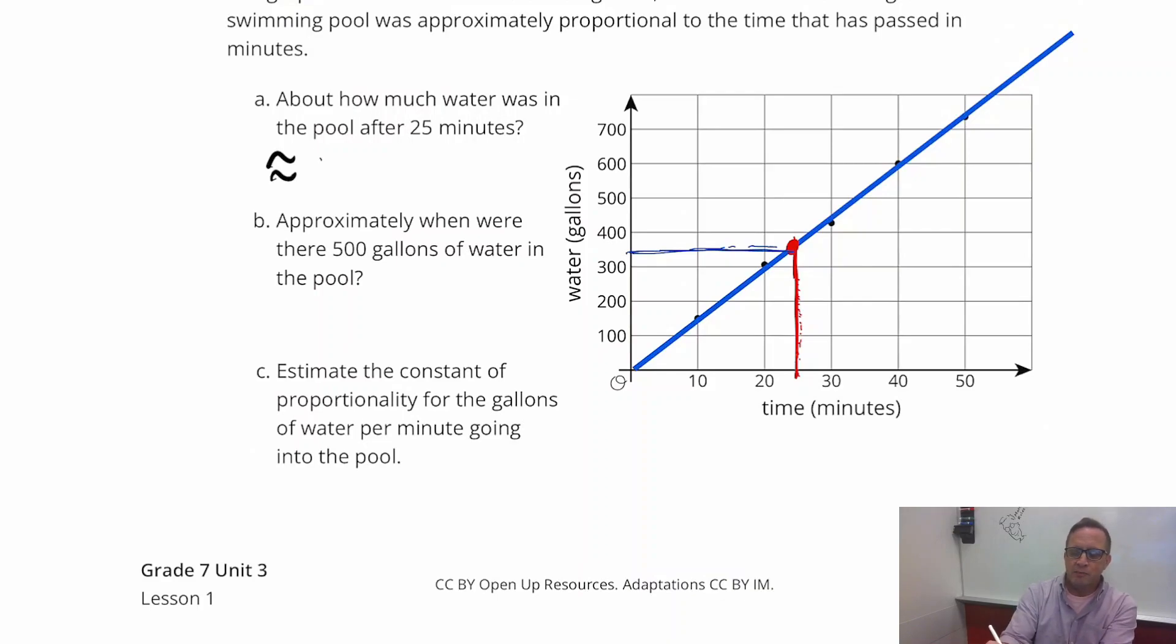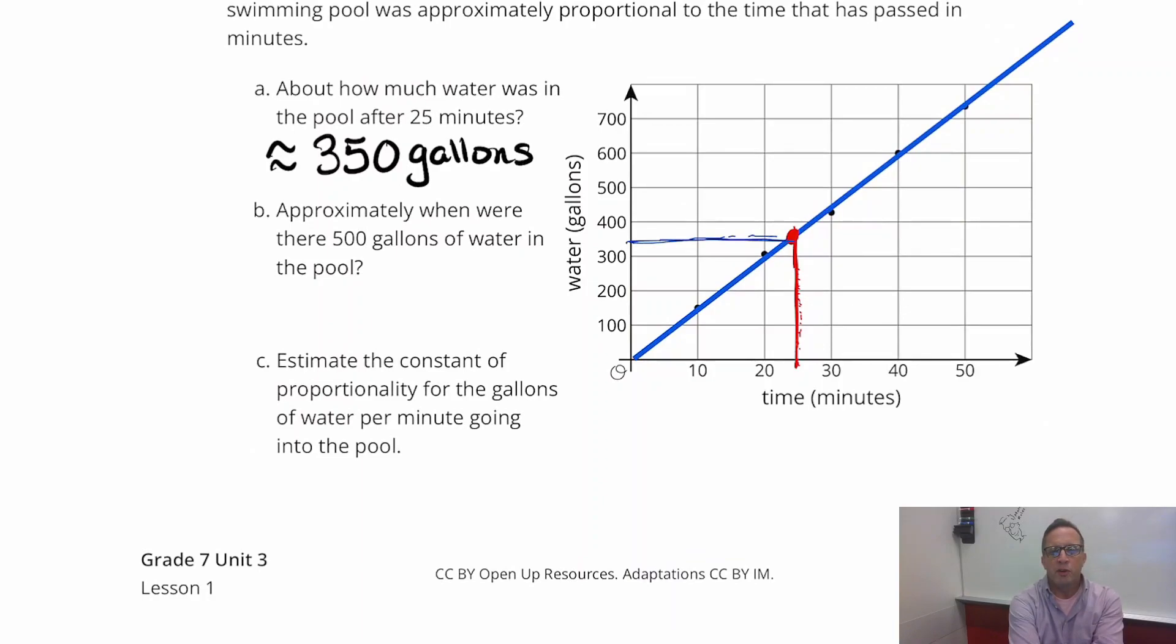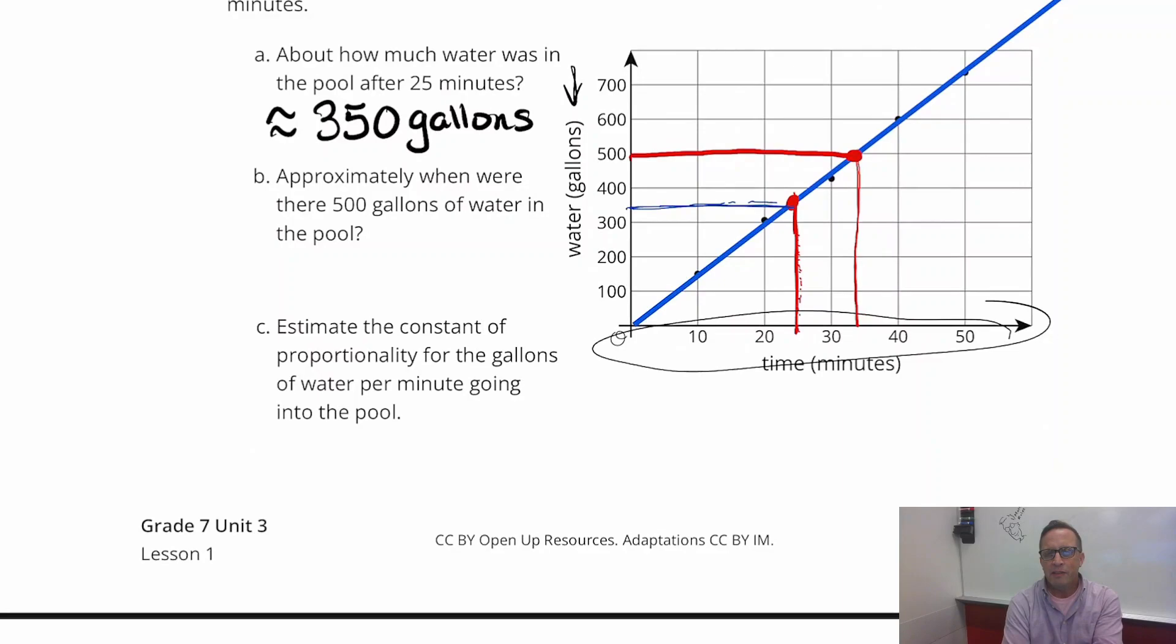So I'll put the approximate sign. So 350 gallons. Part B. Approximately, when were there 500 gallons of water in the pool? Well, on the first one, we were looking at time and we went up to the graph. This time, we're going to start with gallons. We're going to start on the y-axis. And we're going to find 500 and just do the same thing. We're going to just take this and just look where it is. And there it is, right there.